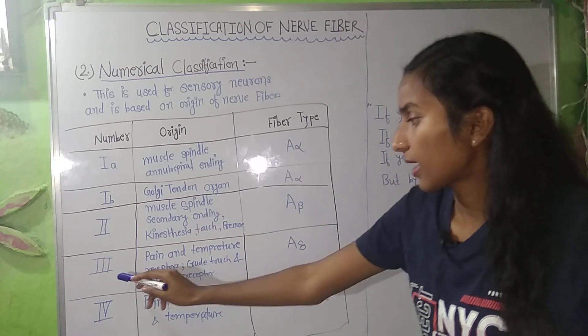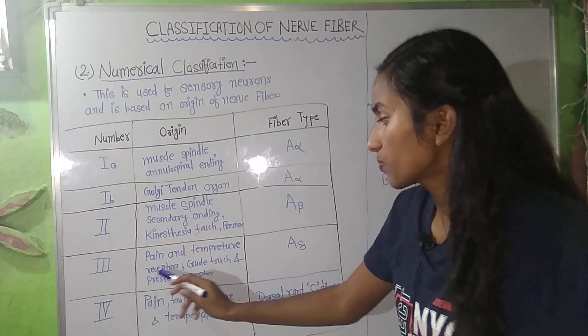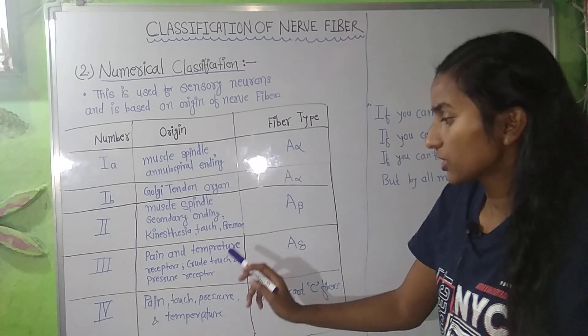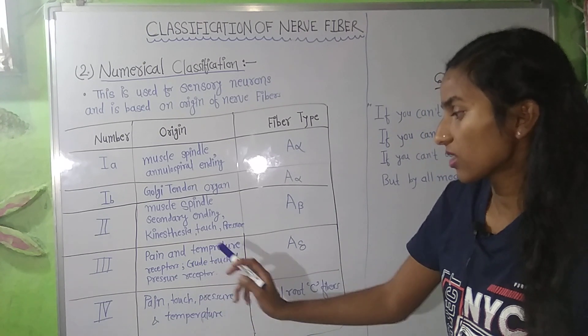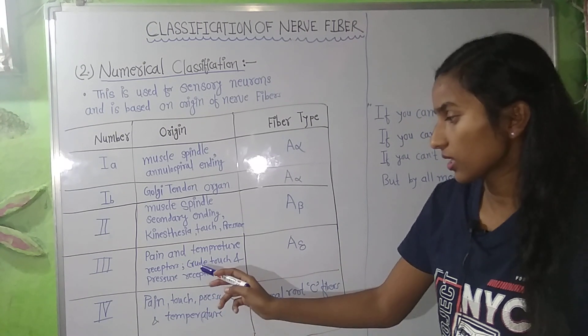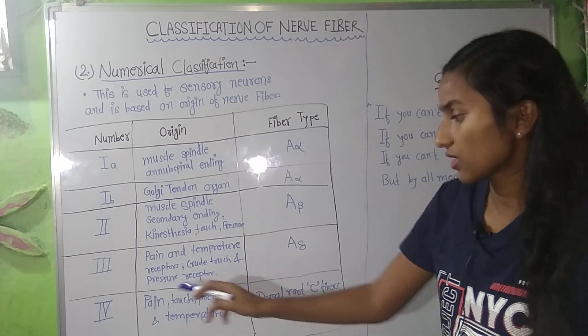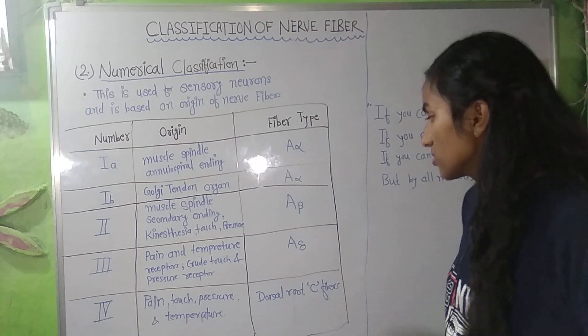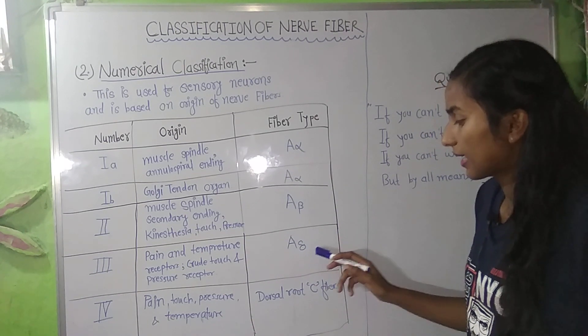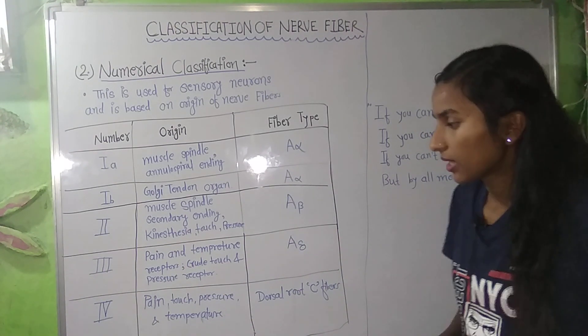The third number corresponds to pain and temperature receptors, as well as crude touch and pressure receptors where these fibers originate. The fiber type is A-delta.